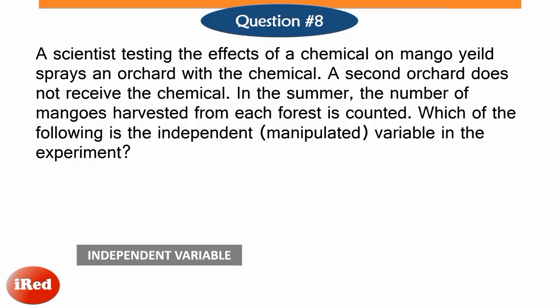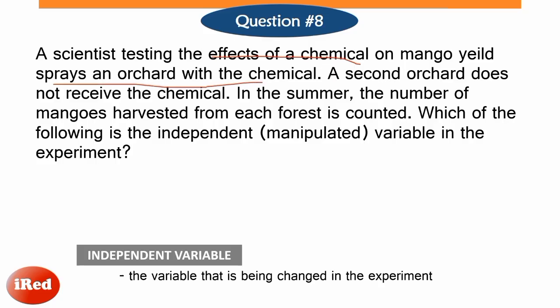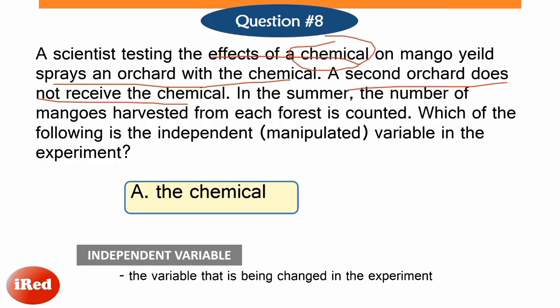To recall, the independent variable is the variable that is being changed in the experiment to see its effects. In the problem, the scientist tests the effects of a chemical on mango yield. The scientist applied the chemical on the first orchard but not on the second orchard. Thus, the independent variable is the chemical, and that is letter A.